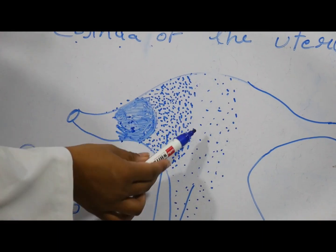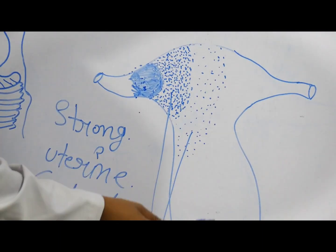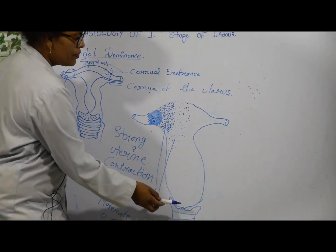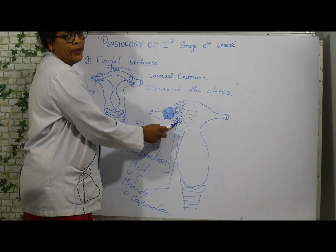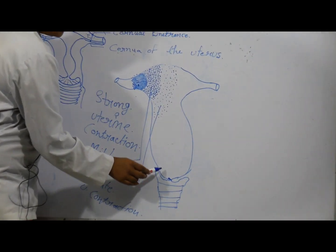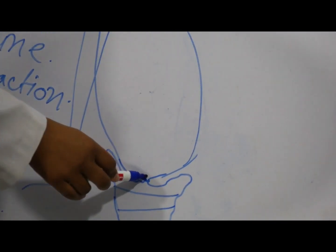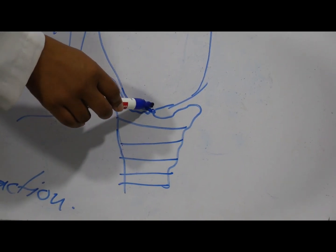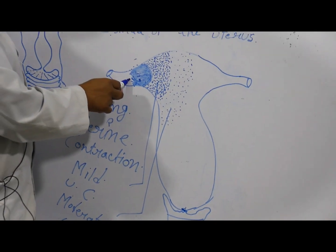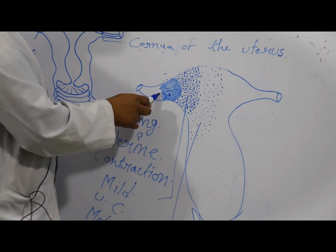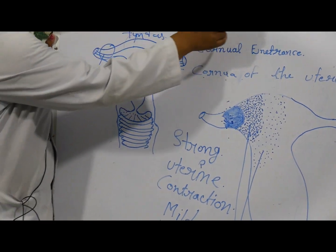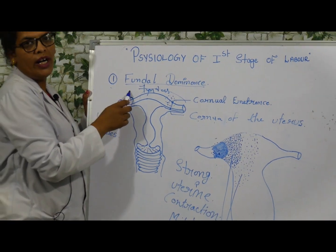These contractions spread throughout the entire uterus and pass down to the cervix. Because of the effect of these strong uterine contractions, the cervix will dilate. The most intense uterine contractions remain in the fundal region — this is why the first phase of labor is called fundal dominance.